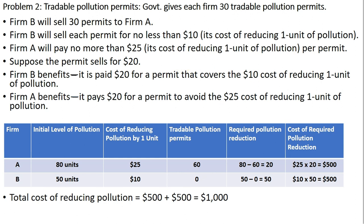Firm A will pay no more than $25 per permit — its cost of reducing one unit of pollution. So Firm B will sell permits to Firm A, and the price will be somewhere between $10 and $25. Let's say the price will be $20. Both firms benefit: Firm B covers its $10 reduction cost and profits, while Firm A pays $20 to avoid the $25 reduction cost. Both sides of the trade are made better off.